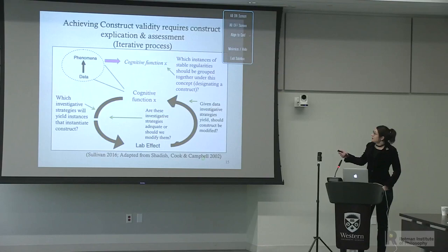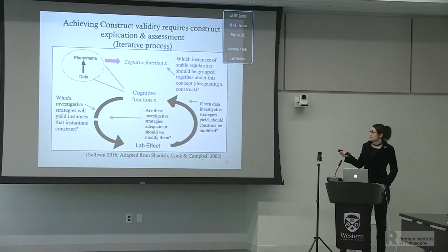Achieving construct validity is considered an iterative process. When an investigator is in the laboratory, they ask which instances of stable regularities in the world should be grouped under that construct, and which investigative strategies will yield instances of it in the laboratory. Ideally, the investigator asks whether these investigative strategies are adequate or should be modified. Given the results obtained, investigators may decide to modify the construct itself.